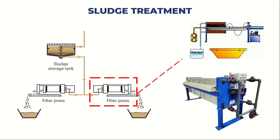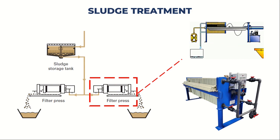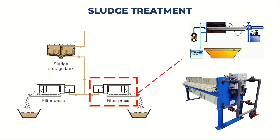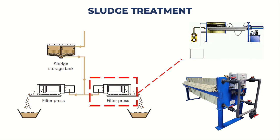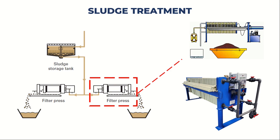Next, we have the filter press. This equipment is used to dewater the sludge by applying mechanical pressure. The sludge is pumped into the filter press, and as the plates come together, excess water is forced out through the filter cloth, resulting in a cake-like sludge with a higher solids content.